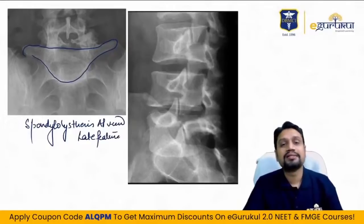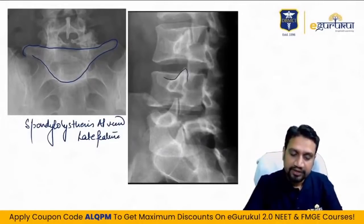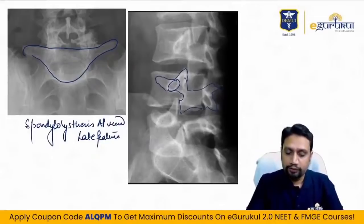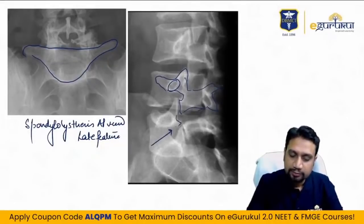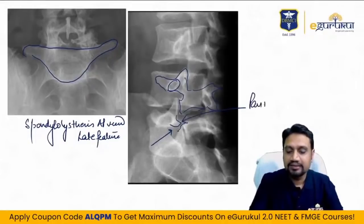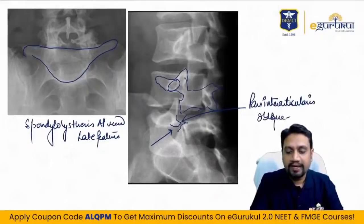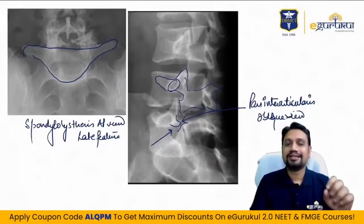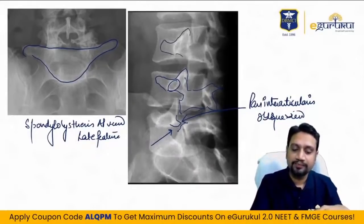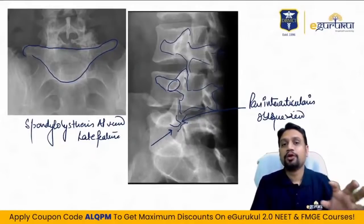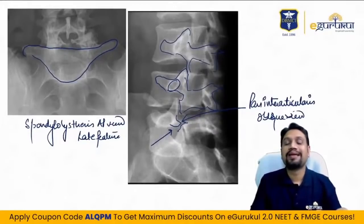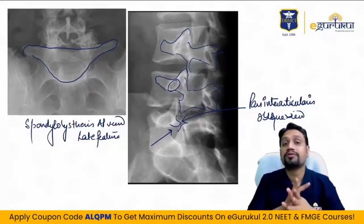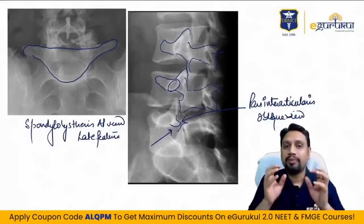In the oblique view of the lumbosacral spine, the Scotty dog sign is seen — a normal appearance. The eye, ear, neck, front paw, back, and tail of the dog correspond to different spinal structures. A defect at the pars interarticularis appears as a break in the neck of the dog — called the beheaded Scotty dog appearance. This is best appreciable in the oblique view.